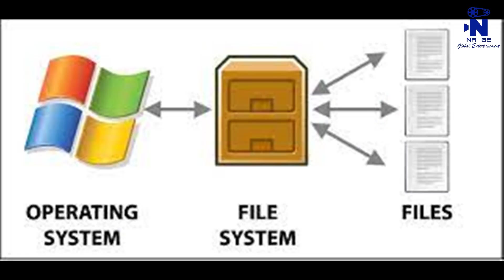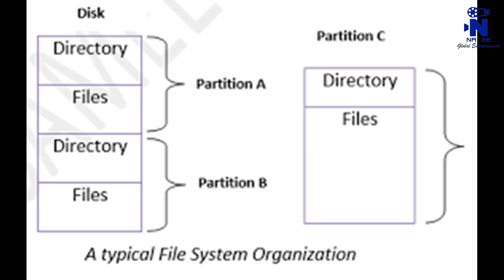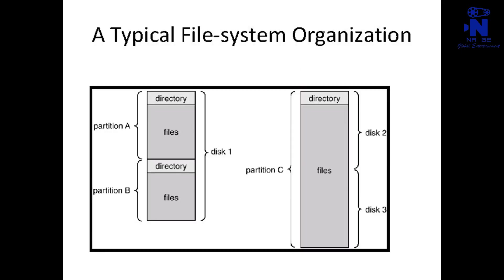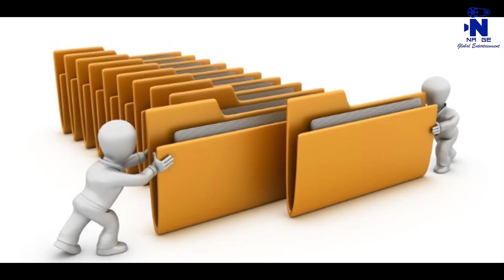What is a file system? A file system is a collection of algorithms and data structures that perform the translation from logical file operations to actual physical storage of information. In computing, a file system determines how data is stored and retrieved. Without using the file system, information placed in a storage medium would be one large body of data with no way to know where one piece of information stops and the next one begins.